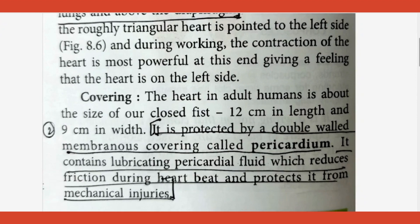Coming to what is pericardium — it's a protective double-walled membrane. Between the two membranes you have a fluid also. The name of the membrane is pericardium and the fluid is called pericardial fluid. Its function: it reduces friction during heartbeat and protects the heart from mechanical injuries — so two things: lubrication and protection.